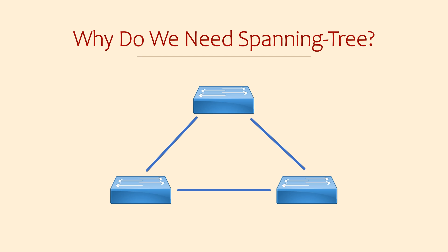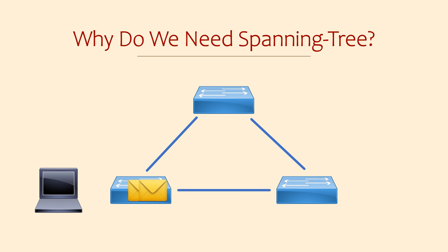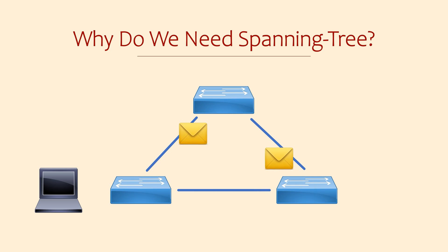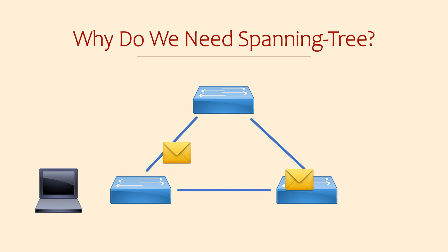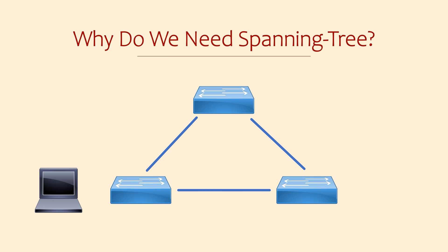So why do we need Spanning Tree? Think about what happens to a layer 2 network when a broadcast is sent — the broadcast goes everywhere. What does that mean for a topology like this one? One switch will forward the broadcast to the other switches, and those switches will pass them on. Eventually the traffic is looping around forever, and each connected device will get a copy of the broadcast frame every time it passes through that switch.